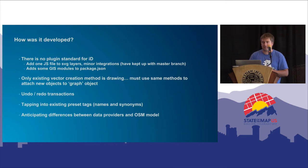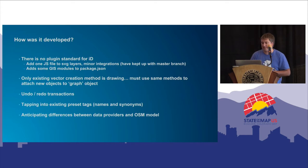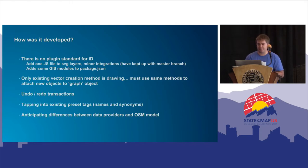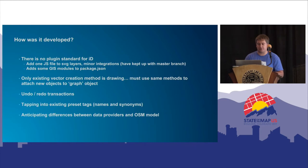We also modify the existing UI system and some integrations into the entity editor, which is where you select different tags and presets. To do some of the work we wanted — such as avoiding overlapping data — we've added some GIS modules to the package.json. The only existing method in iD to create vector data is drawing it; when you upload a GPX file, it's only a raster tile overlay. We wanted the imported data to be fully editable in the same way as any other data in the iD editor.